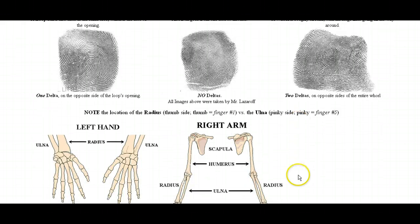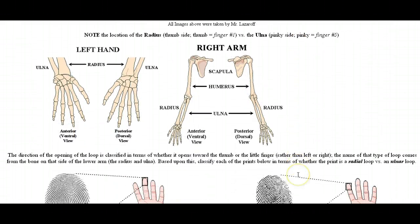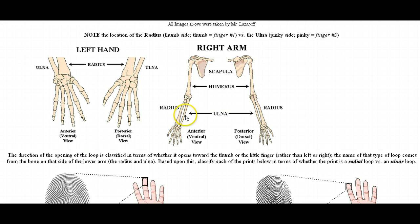One thing we did not talk about in class so much was why we call loops either a radial loop or an ulnar loop. The reason is that the large bone closest to your thumb going down your arm is the radius, and the inside one closest to your pinky is the ulna. So that's why we call one pointing towards your thumb a radial loop and the one pointing towards your pinky an ulnar loop.